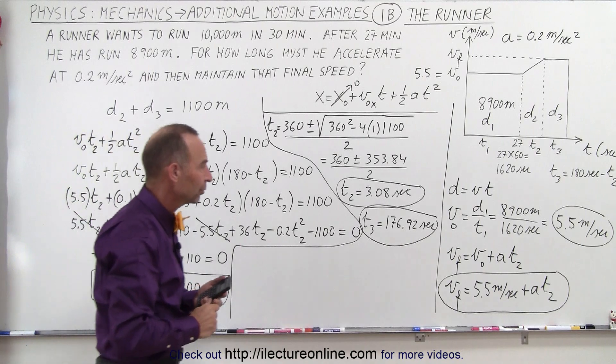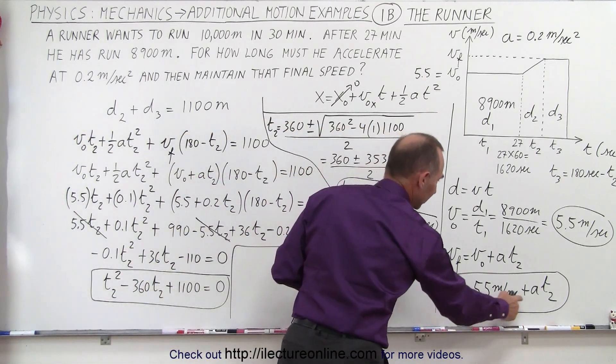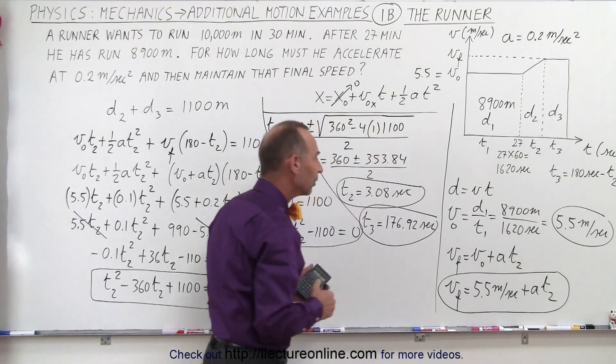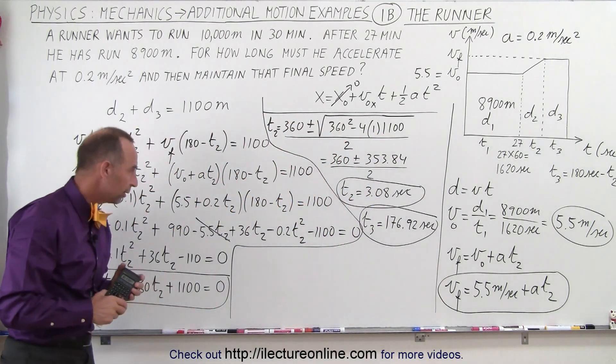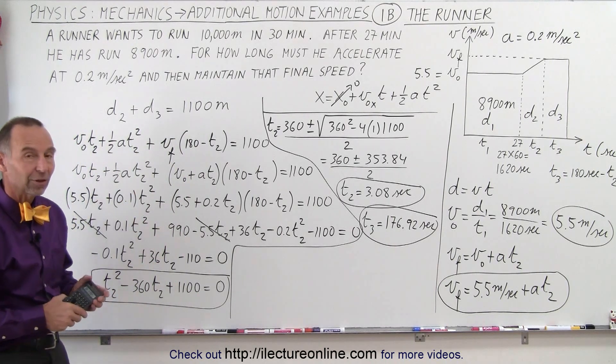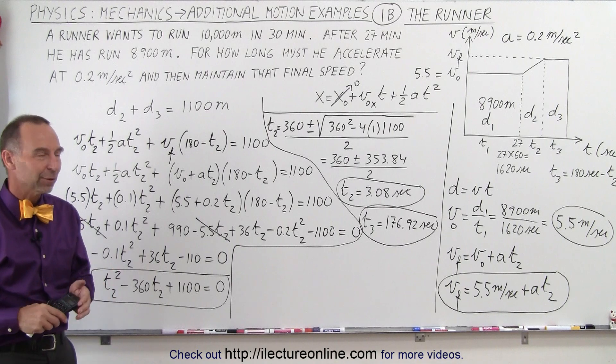If you want to then find out what your final velocity is, you simply take 0.2 times t2, and that will then tell you everything about the runner. But at least we've answered the question, and it can be done using equations of kinematics basics, just like that. And that's how we do that.